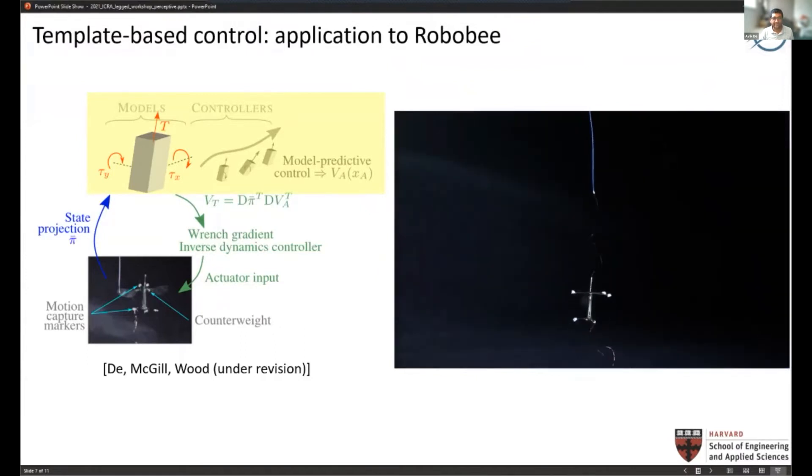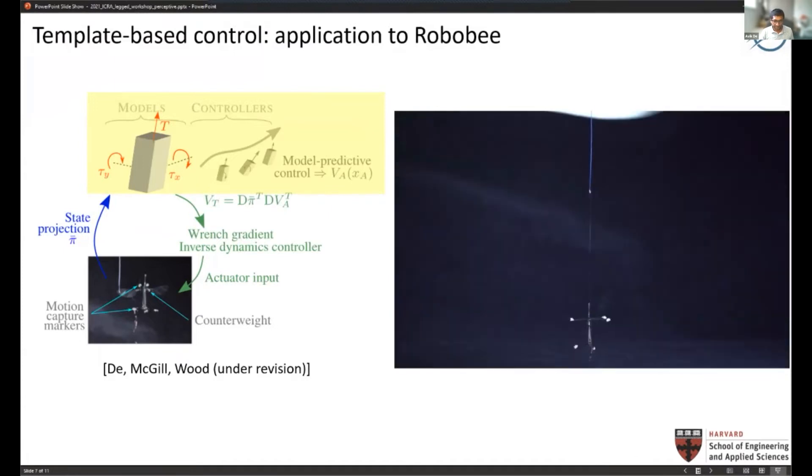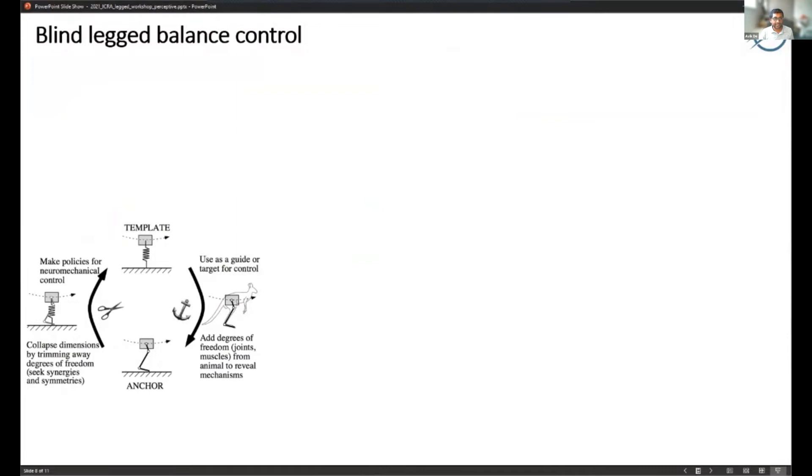We take a simple idea of a five dot model for a flapping thing and apply template model predictive control, and then can anchor that on this very complicated RoboBee system which has complicated aerodynamics and things like that. A similar idea can be applied obviously to legged robot systems.